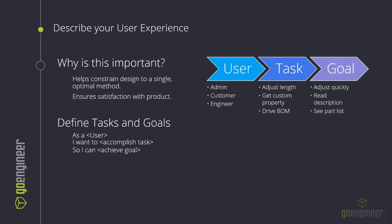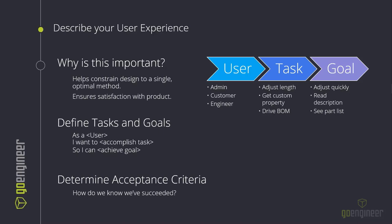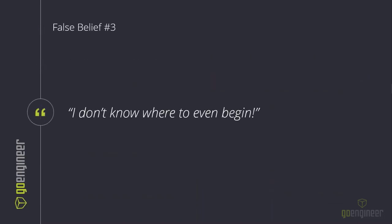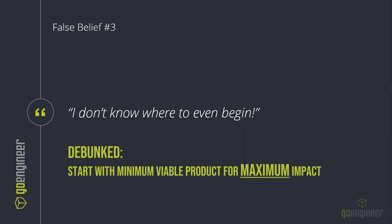We accomplish this through user stories, where we define tasks and goals. It works like this: 'As a [user], I want to [accomplish some task] so I can [achieve some goal].' For example: 'As an admin, I want to get custom properties so that I can read the description and write it to my ERP.' We can adjust which user, task, or goal we're targeting to tell many different stories. Once tasks and goals are outlined, we determine acceptance criteria — the technical details that illustrate what a goal achieved looks like, such as value ranges, increments, dependencies, or simple usability phrases.